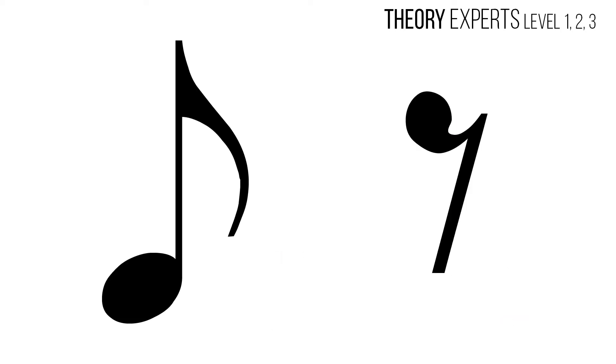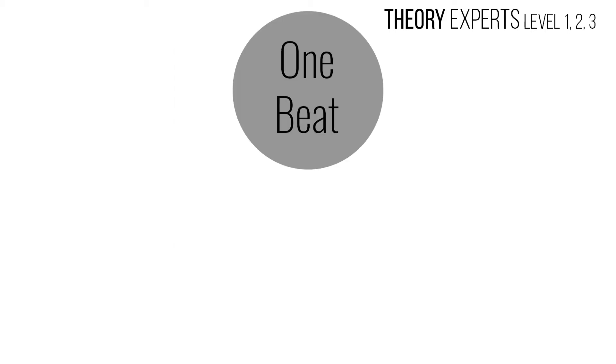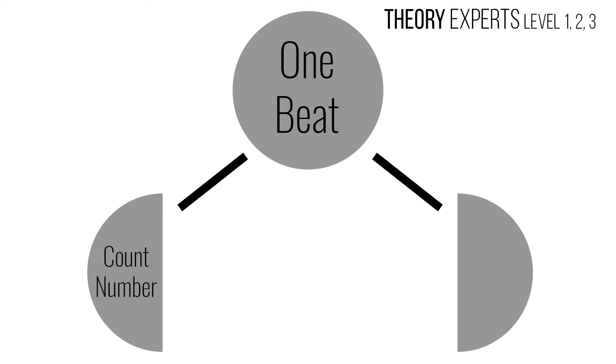Eighth notes and rests are each worth half of one count. We break one beat into two parts, giving the first part the count number, and the second part the and.